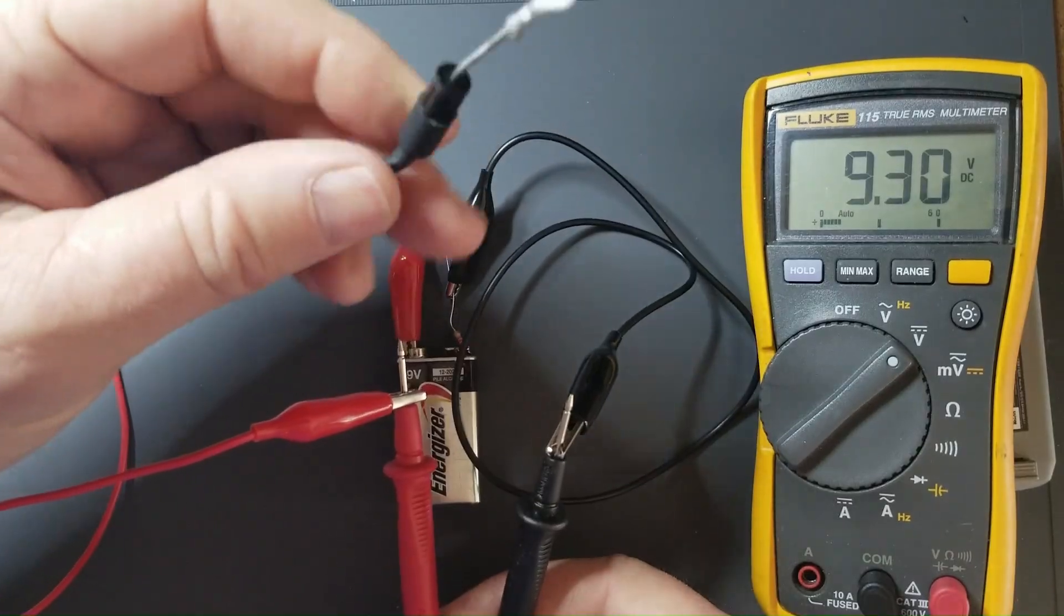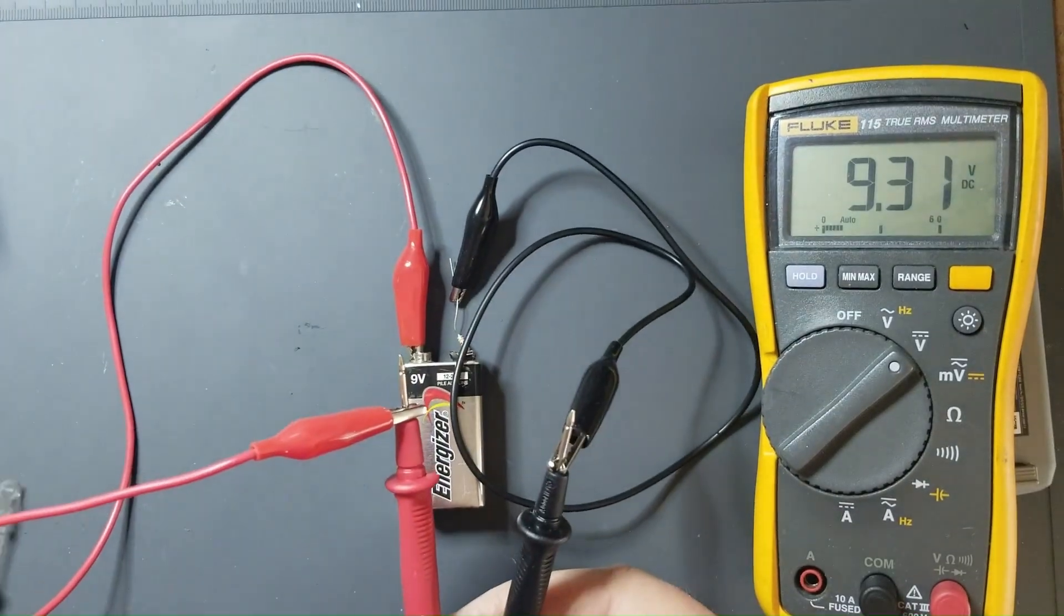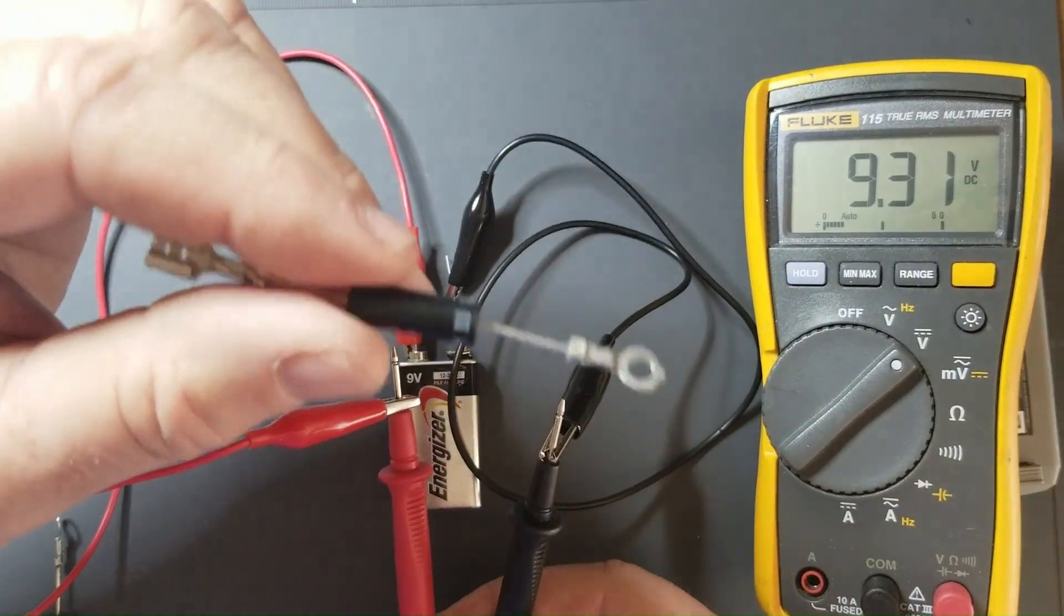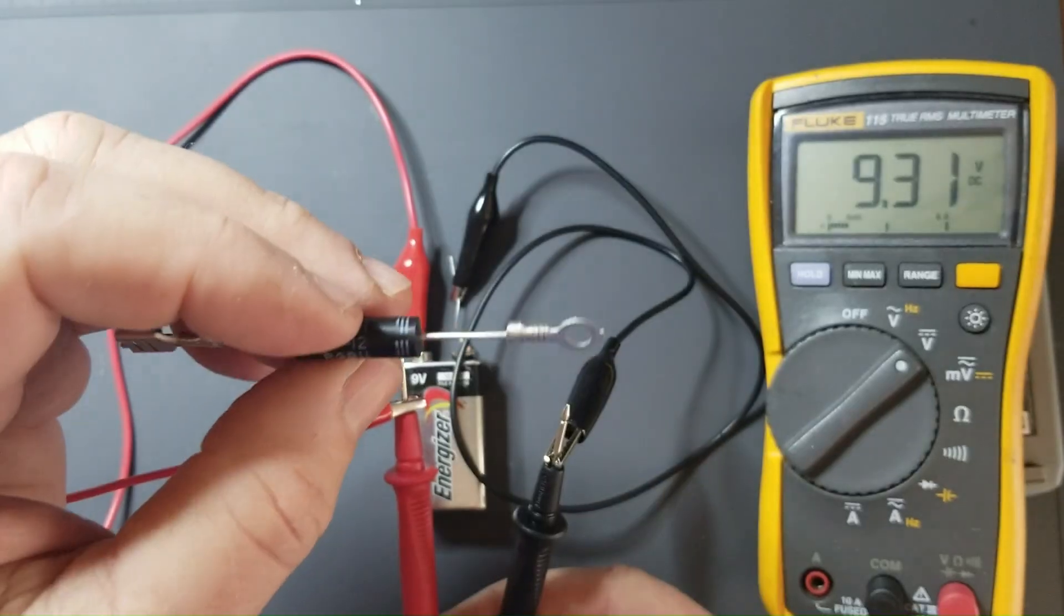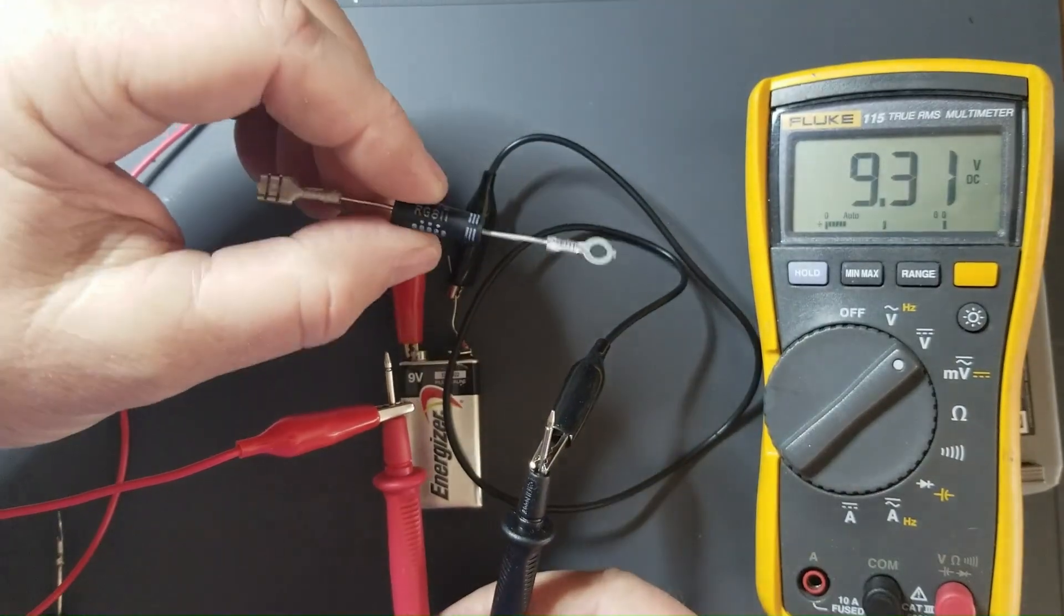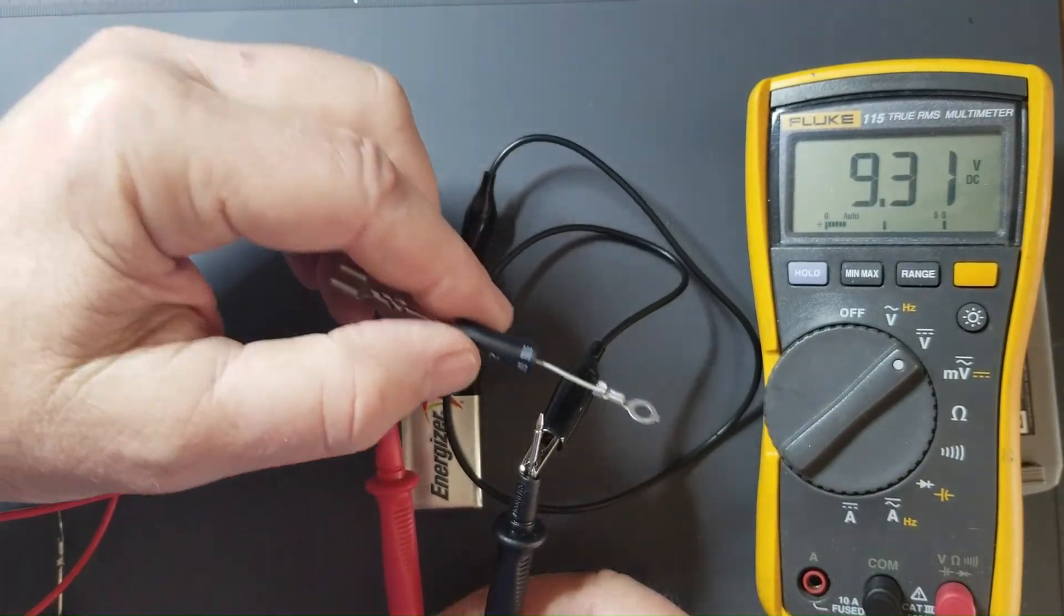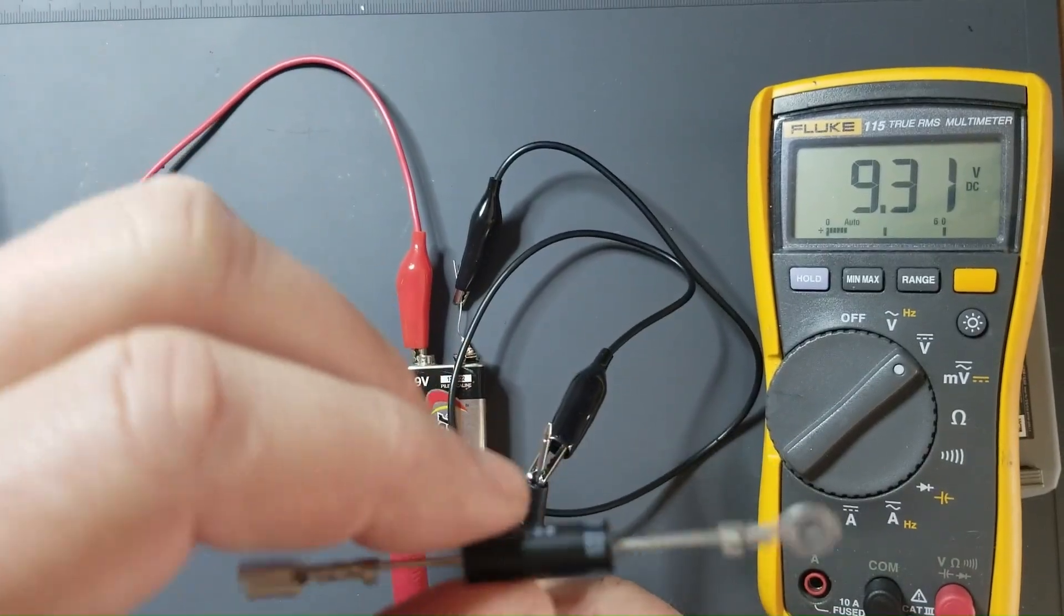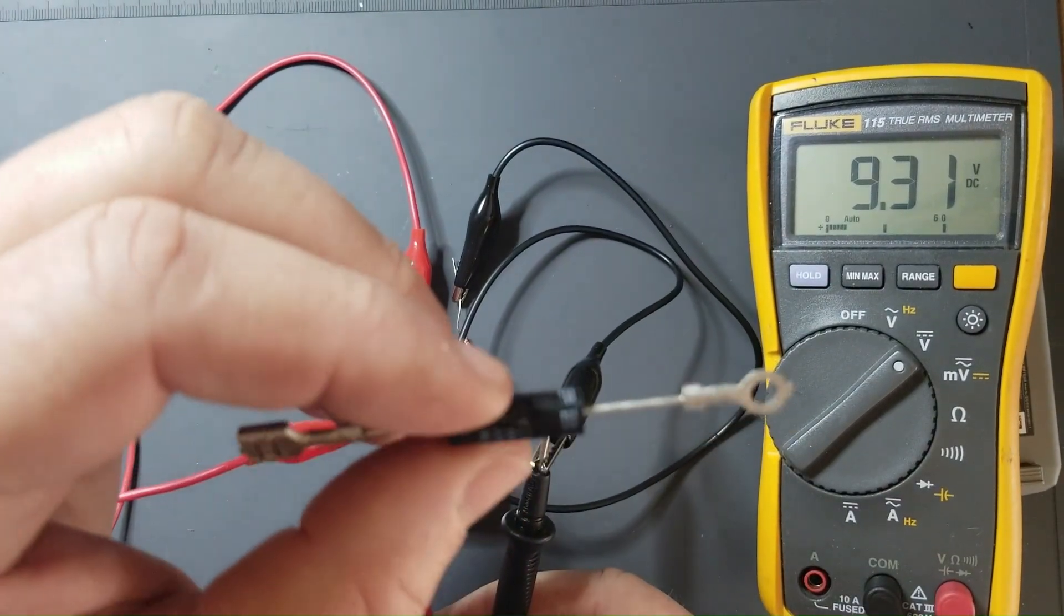Typically when microwave diodes go bad this is what's going to happen to them. It's very uncommon for a microwave diode to fail in an open state where you're not getting a reading either way. I have seen it happen but usually you're going to see some kind of physical manifestation on the outside of the diode where it's actually damaged.